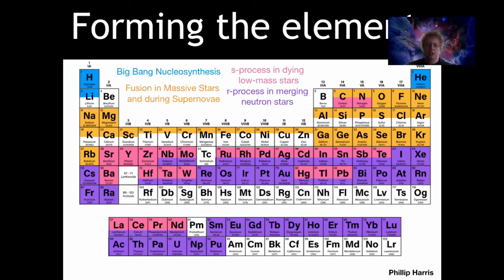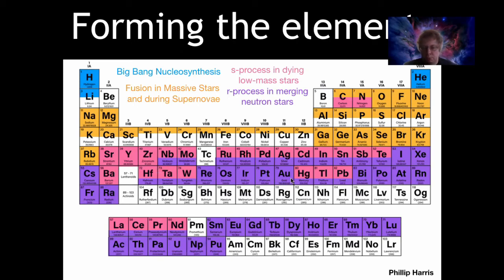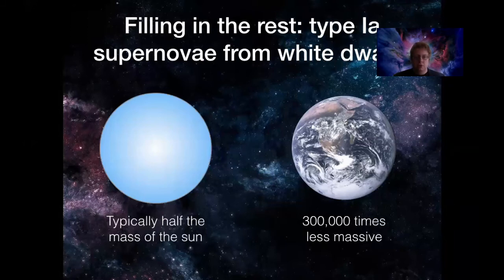The r-process elements overlap substantially with those from the s-process, but the extra energy allows you to push to even more massive nuclei — all the way up to uranium, neptunium, and plutonium. So the next time you look at a gold wedding ring, remember that gold was most likely formed in the collision of two neutron stars long before our solar system existed. Those gold atoms were spread into the cosmos, collapsed into our sun and solar system, and ended up in the gold we see today.